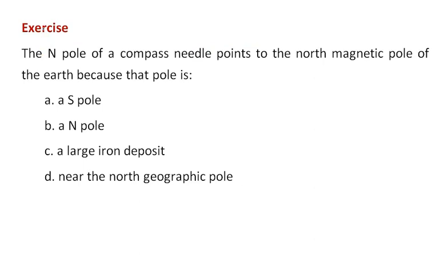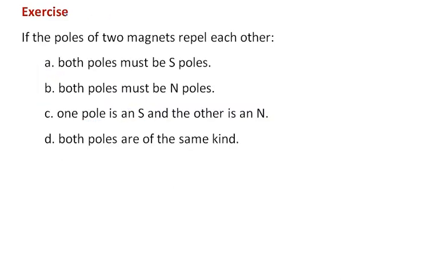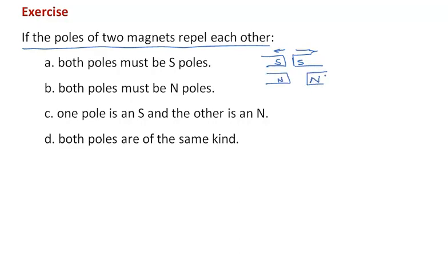Now let us discuss a few questions based on what we have learned in the 'Fun with Magnets' chapter. The north pole of a compass needle points to the north magnetic pole of the earth because that pole is a south pole — the correct answer is 'a south pole.' If the poles of two magnets repel each other, both poles must be south pole — this is only partly correct, because repulsion also takes place when both poles are north and north. So this answer is not totally correct.